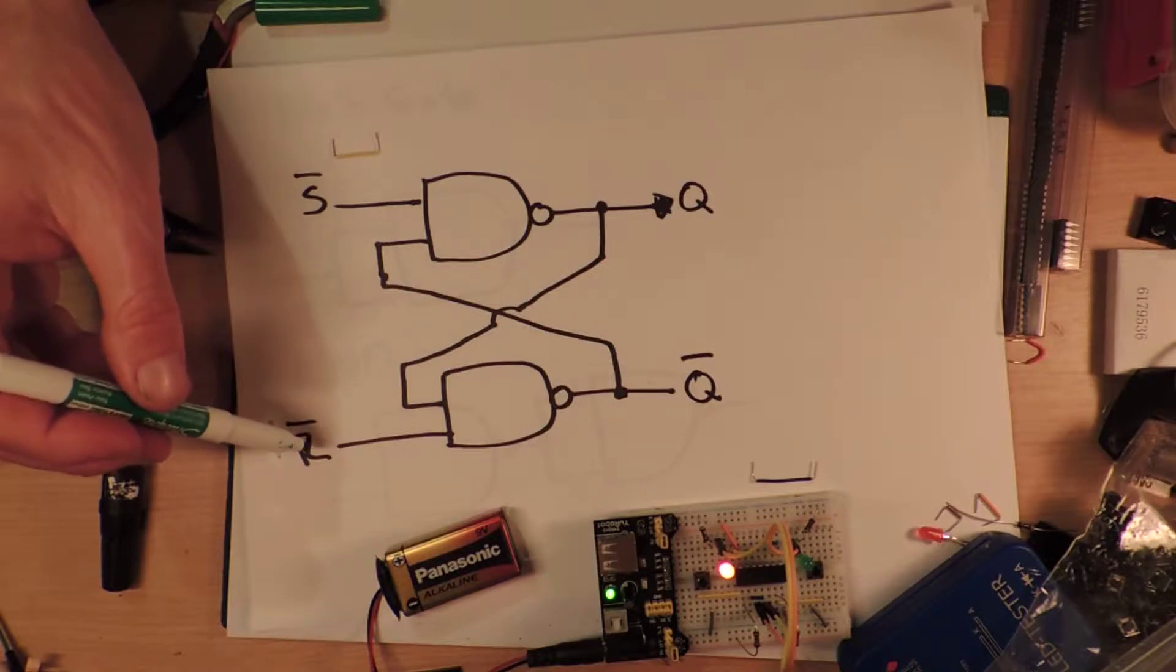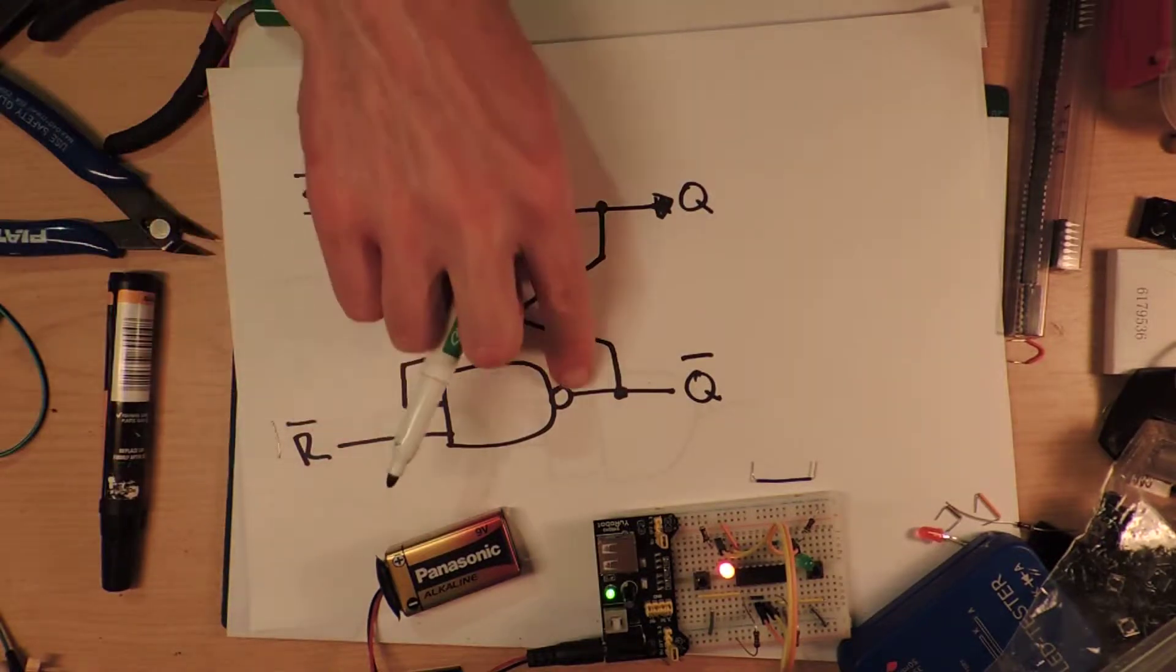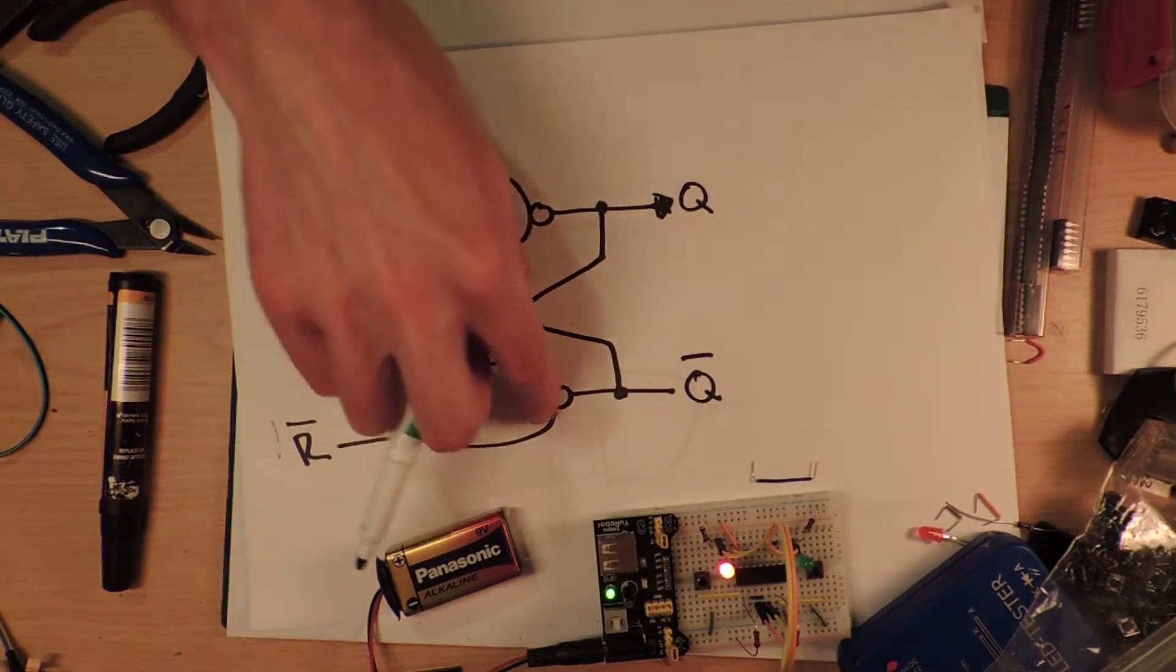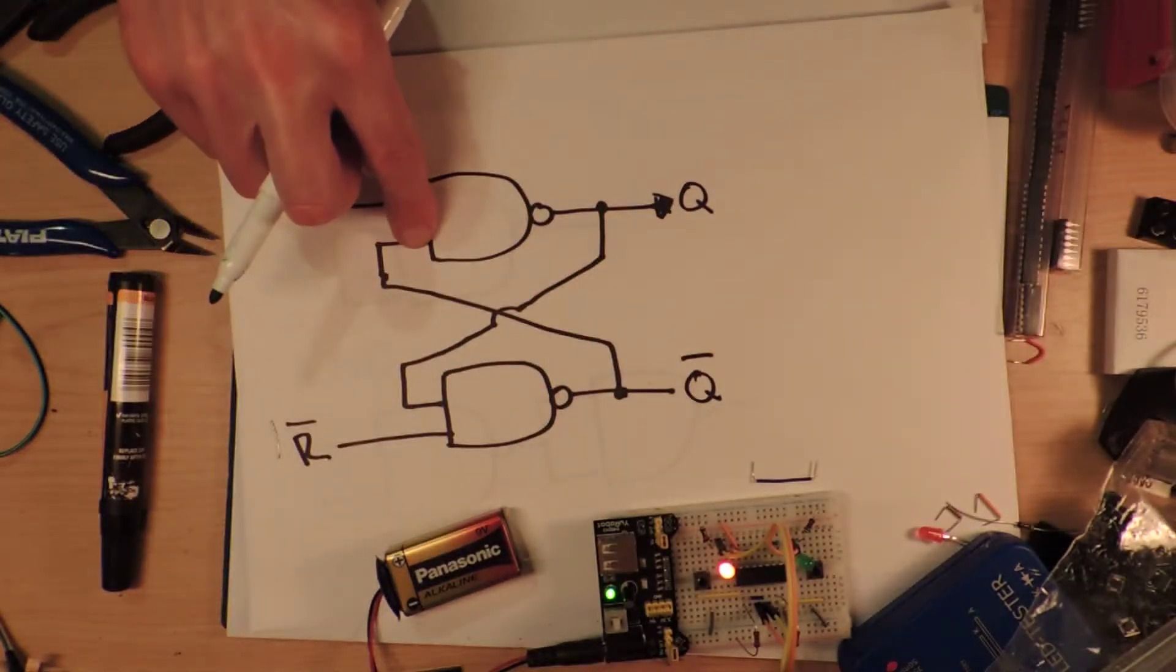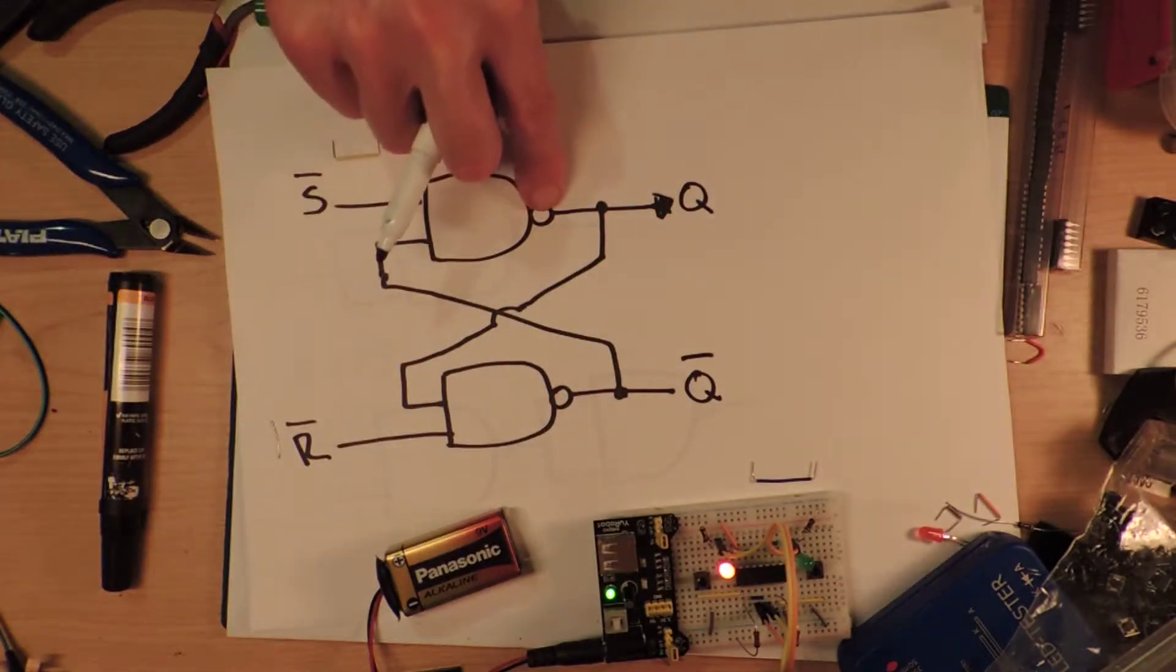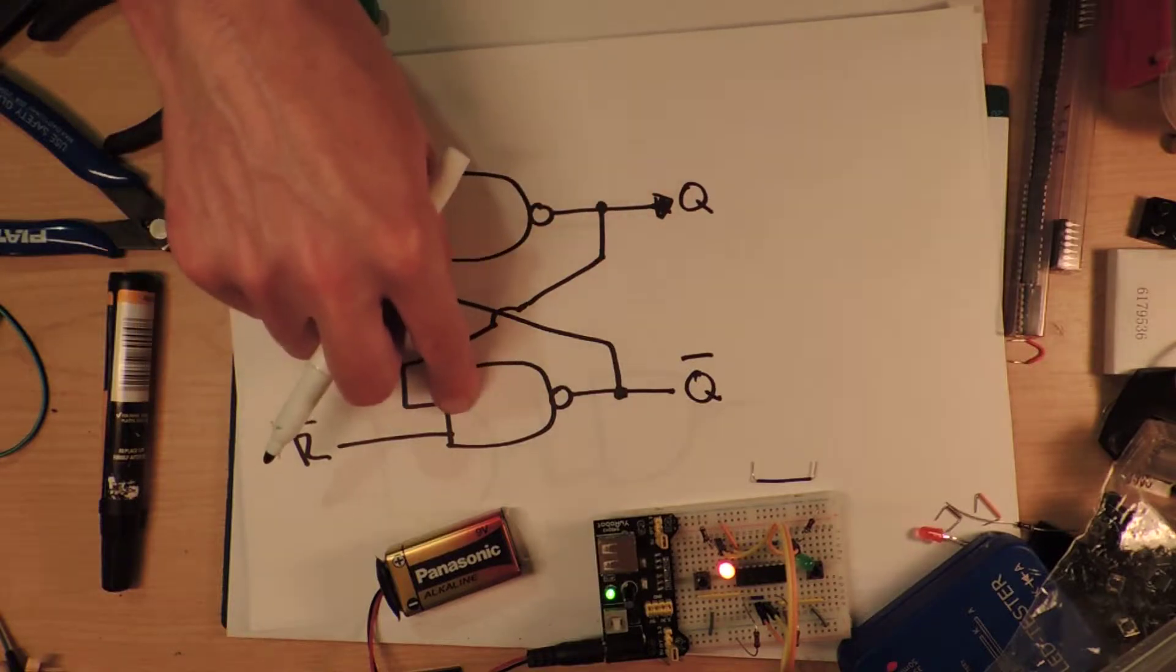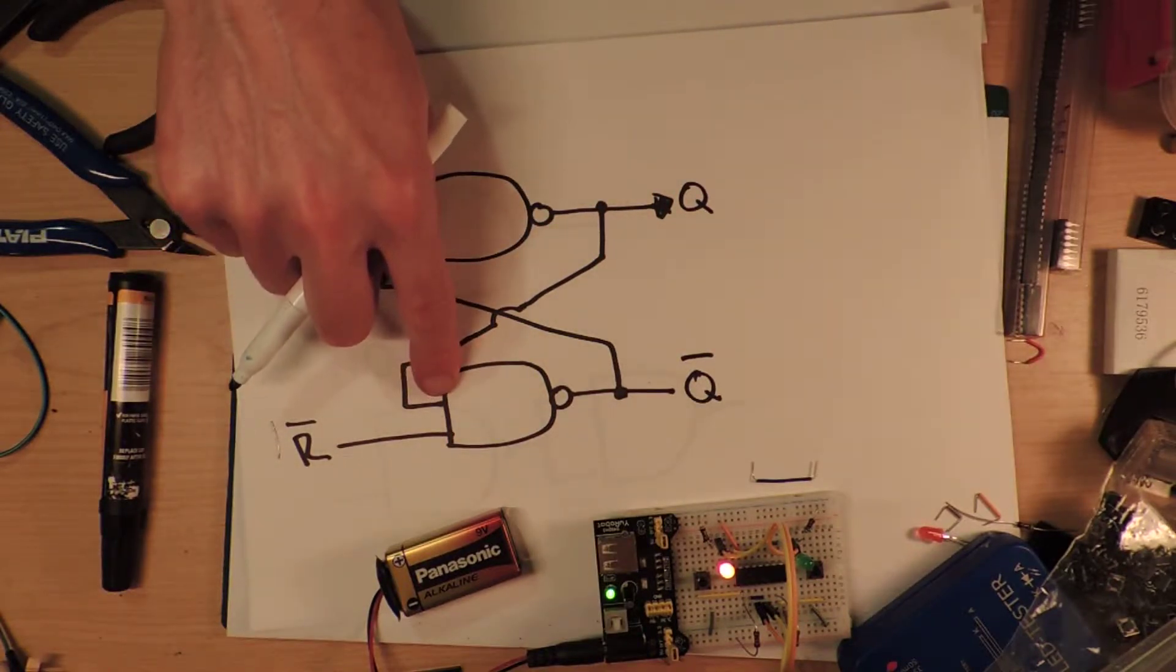If you pull either of them low though, that's guaranteed to make that one come on. So that will force the state to flip. So if this is on and it goes into here, the output of this will become low. And so that will go into low.